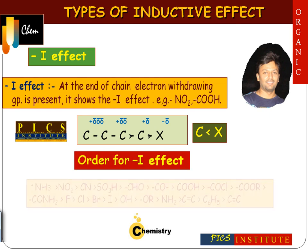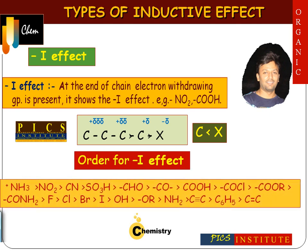A few examples of minus-I effect: maximum minus-I effect is shown by the NH3+ group, then NO2, CN, sulfonic acid, aldehyde, ketone, carboxylic acid, acid chloride, ester, amide, fluorine, bromine, iodine, OH group, OR (alkoxide), and amine group.